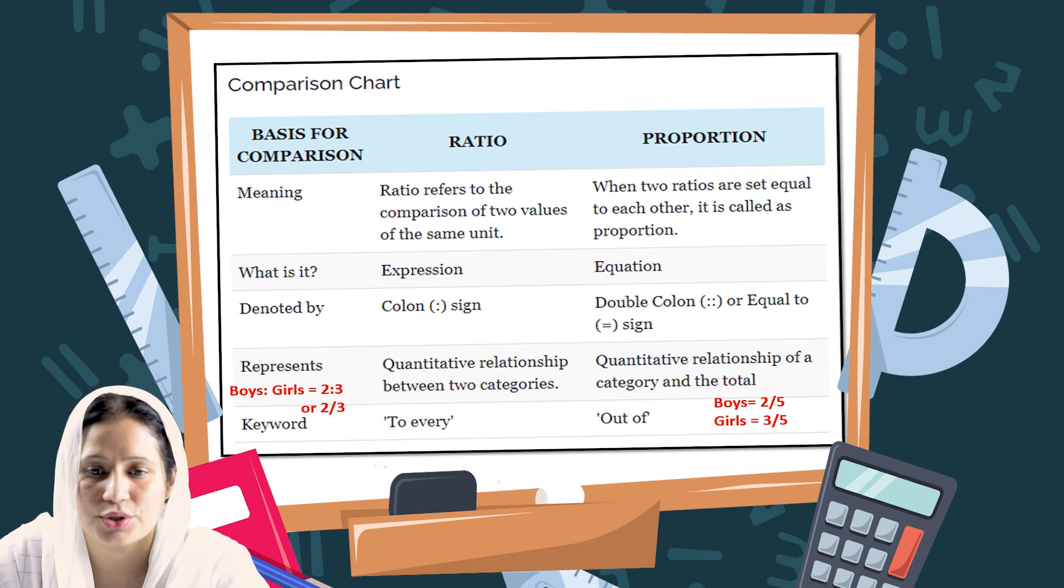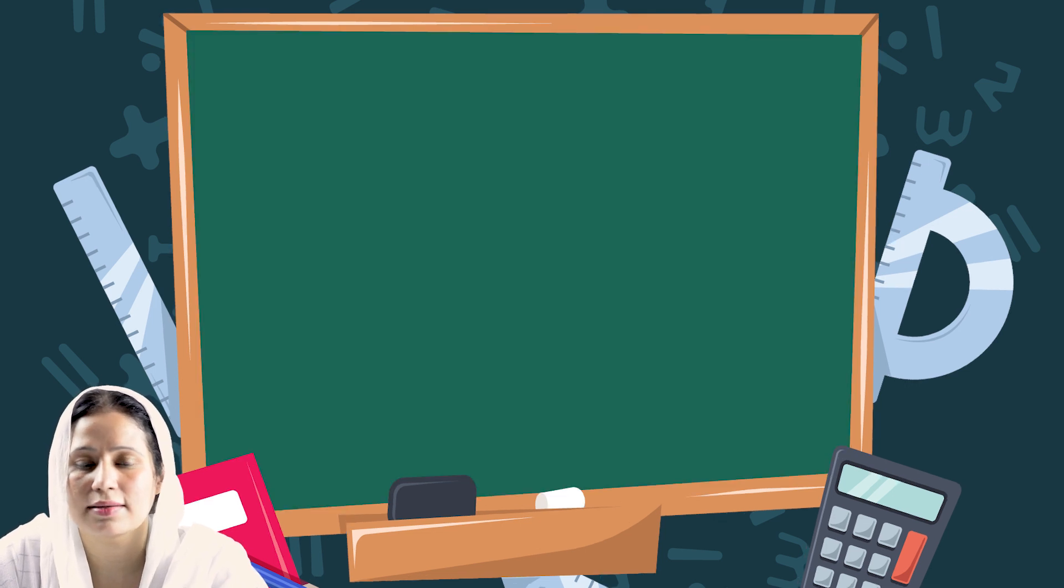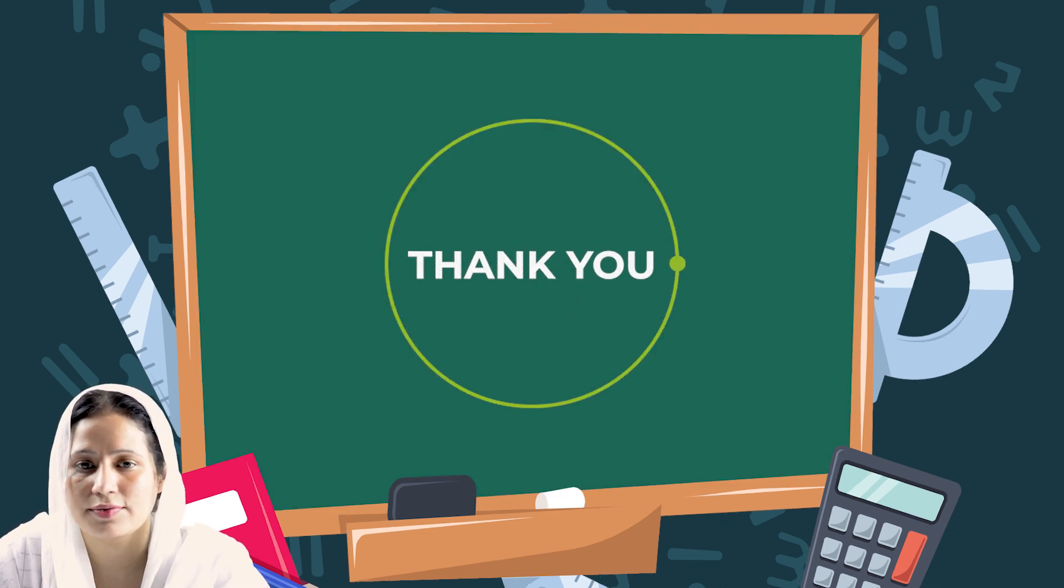To every is to be used for ratio, and out of is to be used for the proportion. Hopefully, you will understand the concept of proportion. In the next video, we'll discuss the types of proportion. Stay tuned.